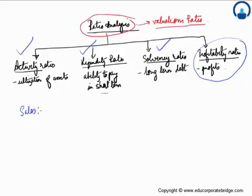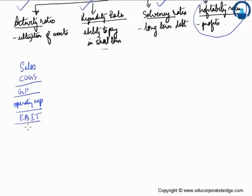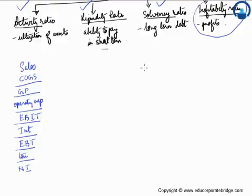Starting with the income statement: we had sales and we had cost of goods sold, so what we had was the gross profit. Then we had the operating expenses or SG&A, so we calculated the EBIT. After calculating the EBIT, the other expense was the interest expense, and then we calculated earnings before taxes, and then we had taxes, so we got the net income.